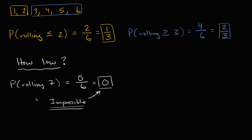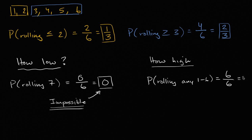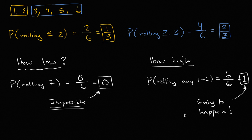Now, how high can a probability get? Consider the probability of rolling any number from one to six. There are six equally likely possibilities, and any one of those six meets this constraint, so the probability is one. If someone says the probability is one, that means it's definitely going to happen. So the maximum probability is one, the minimum is zero — you don't have negative probabilities, and you don't have probabilities greater than one.